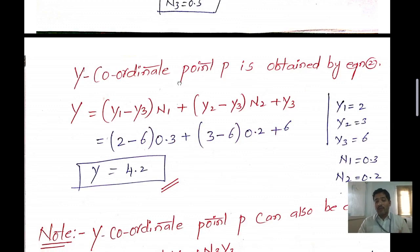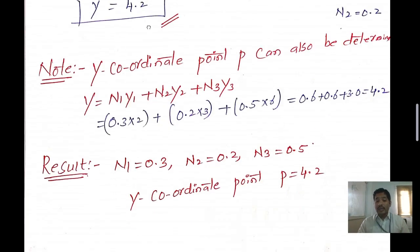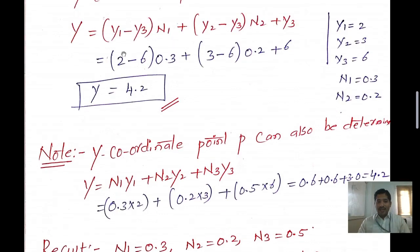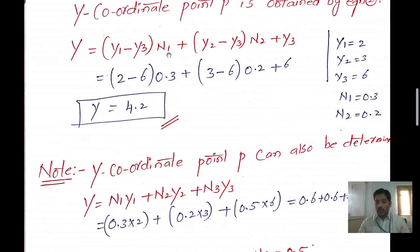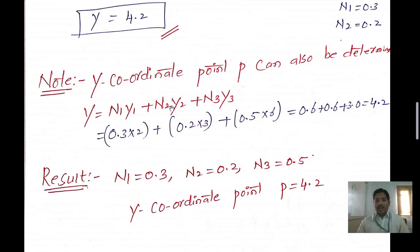To summarize the results: shape function n1 = 0.3, n2 = 0.2, n3 = 0.5, and the y coordinate at the interior point is 4.2. Note that an alternative formula y = n1·y1 + n2·y2 + n3·y3 can also be used and will give the same value of y = 4.2. You can use either formula — it is your choice.